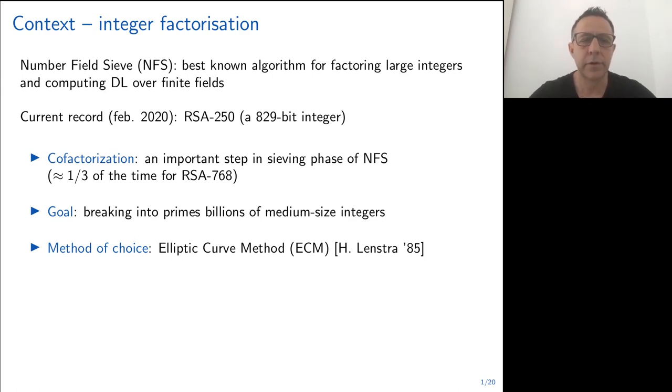The number field sieve algorithm has different steps. One of the first steps is called the sieving phase, and part of this sieving phase consists of breaking into primes millions or even billions of medium-sized integers. This step is called cofactorization, and the time spent in cofactorization is rather important.